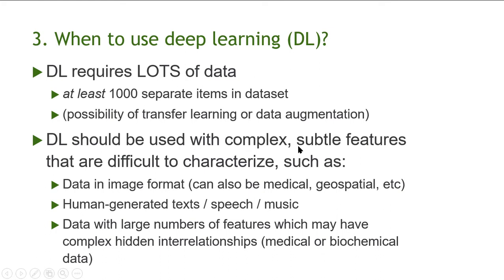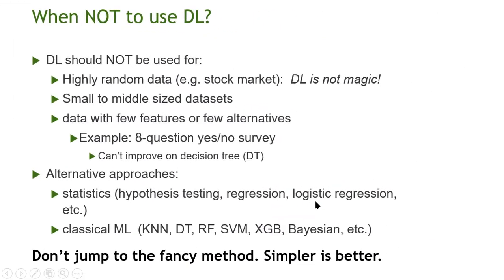Deep learning should be used with complex, subtle features that are difficult to characterize, such as image data. Deep learning is very good for images — photographs, medical images, geospatial images, or image representations of other data types. It is also good for human-generated text, speech, and music, which have complicated overall structure. It can also be used for data with large numbers of features that may have complex hidden relationships, such as drug data, biochemical data, or DNA.